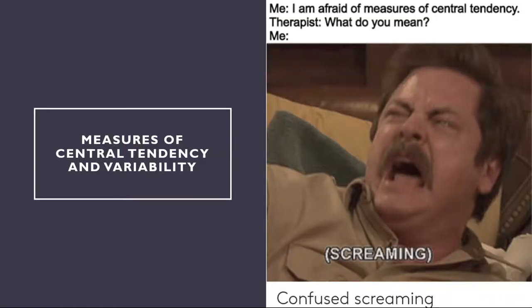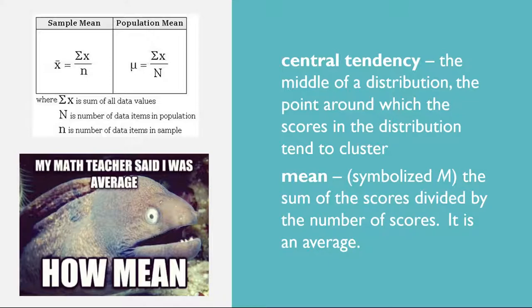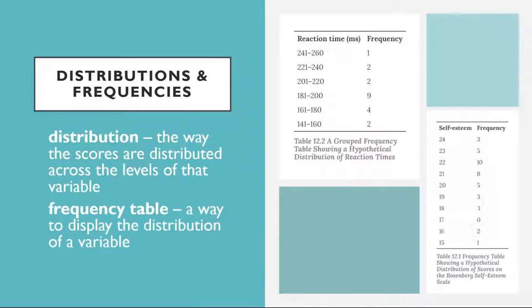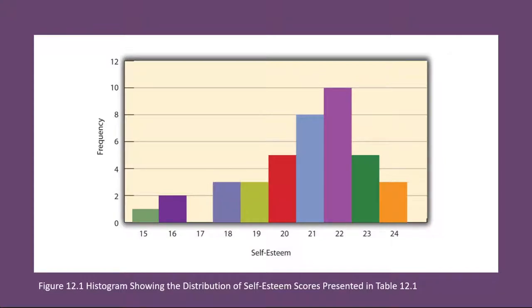Measures of Central Tendency and Variability. It is also useful to be able to describe the characteristics of a distribution more precisely. Here we look at how to do this in terms of two important characteristics: their central tendency and their variability. The central tendency of a distribution is its middle — the point around which the scores in the distribution tend to cluster. Another term for central tendency is average. Looking back at figure 12.1, we can see that the self-esteem scores tend to cluster around the values of 20 to 22. Here we will consider the three most common measures of central tendency: the mean, the median, and the mode.